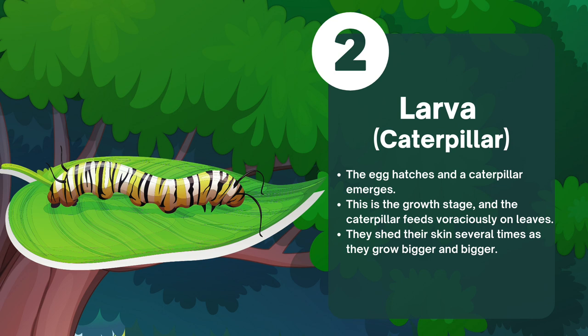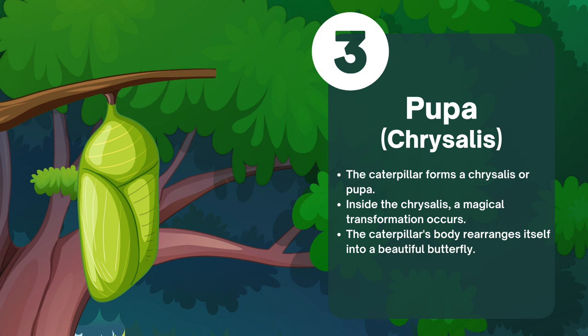Next comes the larva stage, also known as the caterpillar. The egg hatches and a caterpillar emerges. This is the growth stage, and the caterpillar feeds voraciously on leaves. They shed their skin several times as they grow bigger and bigger.